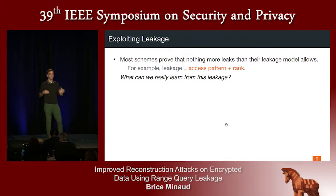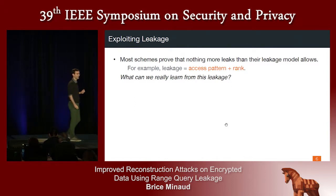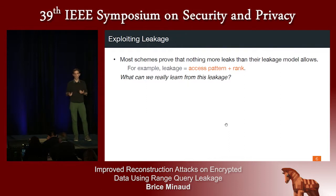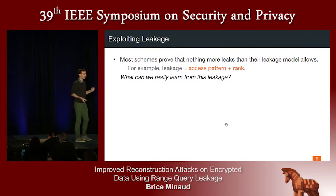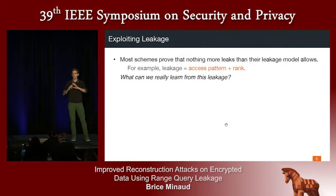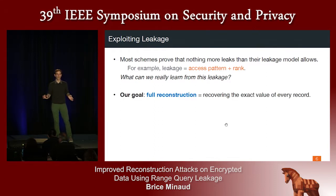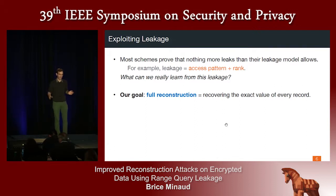We're going to focus mostly on this generic setting where only access pattern is leaked to the server. Most schemes in the literature offer a security proof — they prove that what is leaked to the server is only a certain formal leakage such as access pattern leakage. But the question is: what can the adversary actually learn from that leakage? Our attacks are not going to contradict the existing proofs. Instead, they're going to show that from just access pattern leakage we can learn a lot — in fact, enough to fully reconstruct the value of every record in the database, as if there was no encryption at all.